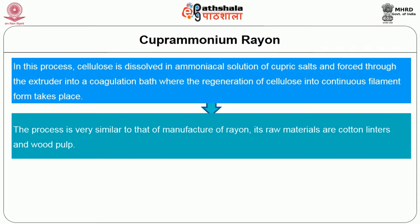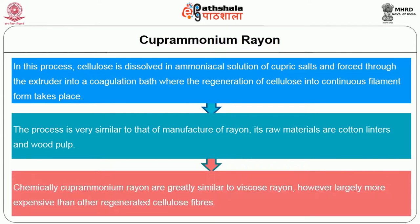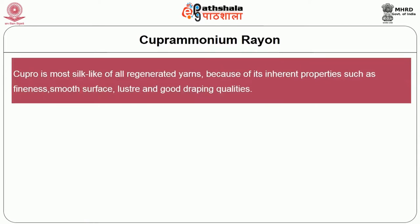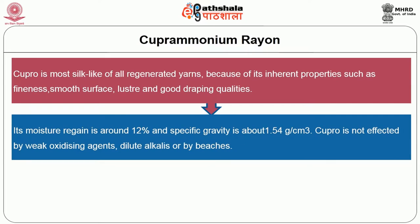Its raw materials are cotton linters and wood pulp. Chemically, cupramonium rayon is generally similar to viscose rayon. However, it is largely more expensive than other regenerated cellulose fiber. Cupro is almost silk-like of all regenerated yarns because of its inherent properties such as fineness, smooth surface, luster and good draping qualities. Its moisture regain is around 12% and specific gravity is about 1.54 grams per cubic centimeter. Cupro is not affected by weak oxidizing agents, dilute alkalis or by bleaches.